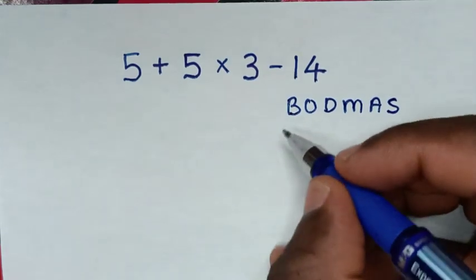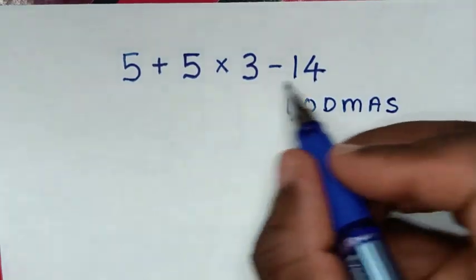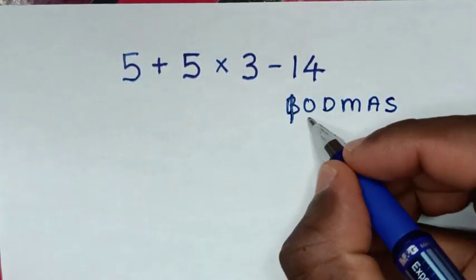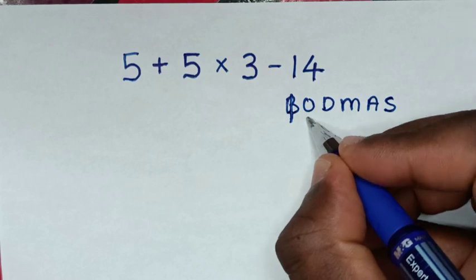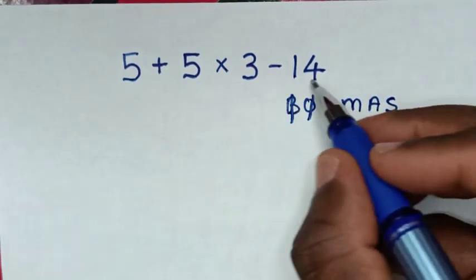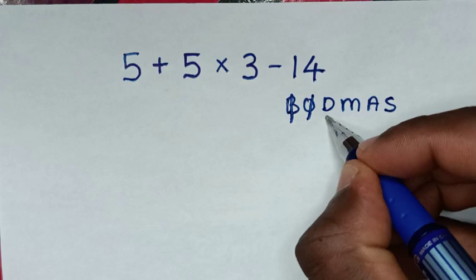B is bracket - in this problem we don't have bracket. O is order or exponents - we don't have order or exponents in this problem. D is division - we also don't have division.